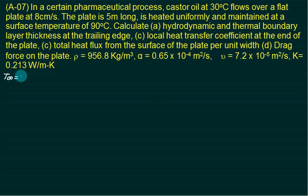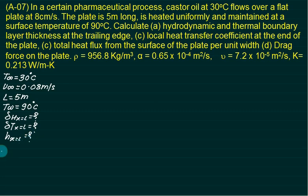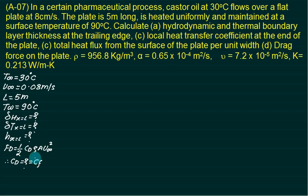The fluid temperature is 30 degrees Celsius, velocity is 8 cm/s (0.08 m/s), plate length is 5 meters, and wall temperature is 90 degrees Celsius. We need to find the hydrodynamic boundary layer thickness delta_hx at x = L, the thermal boundary layer thickness delta_t at x = L, and the local heat transfer coefficient hx at x = L. For drag force, we use: F = 0.5 × CD × rho × A × U_infinity², where CD equals the average friction coefficient CfL.